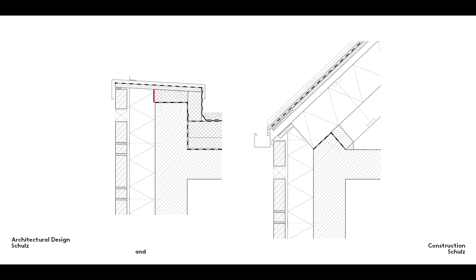Different hatching patterns on component layers that serve the same purpose signal a change in material and material characteristics. They may illustrate a change from masonry to reinforced concrete in the load-bearing structure, or the transition from mineral wool insulation behind a facing skin to a pressure-resistant polystyrene foam insulation on a flat roof, as illustrated here.